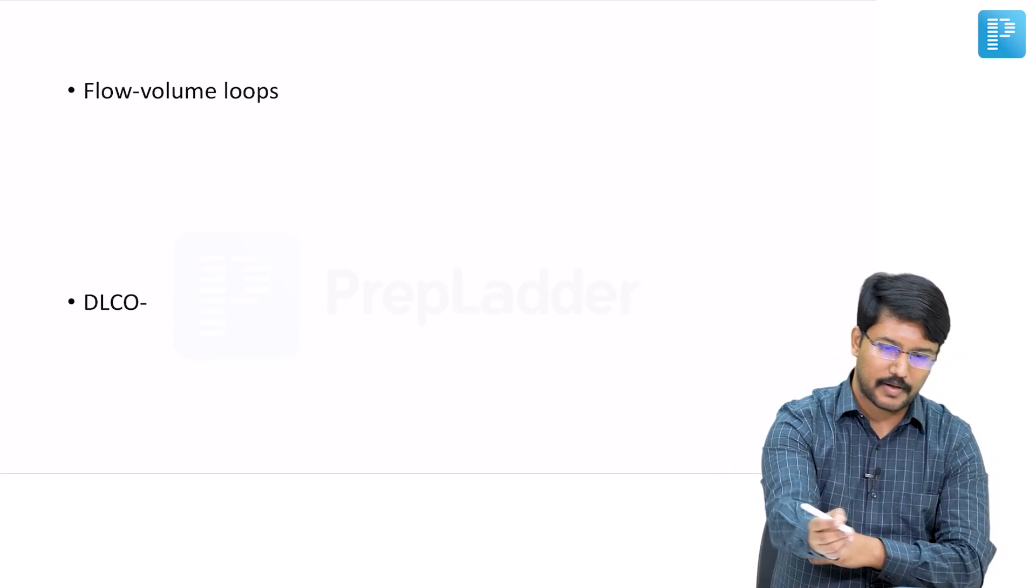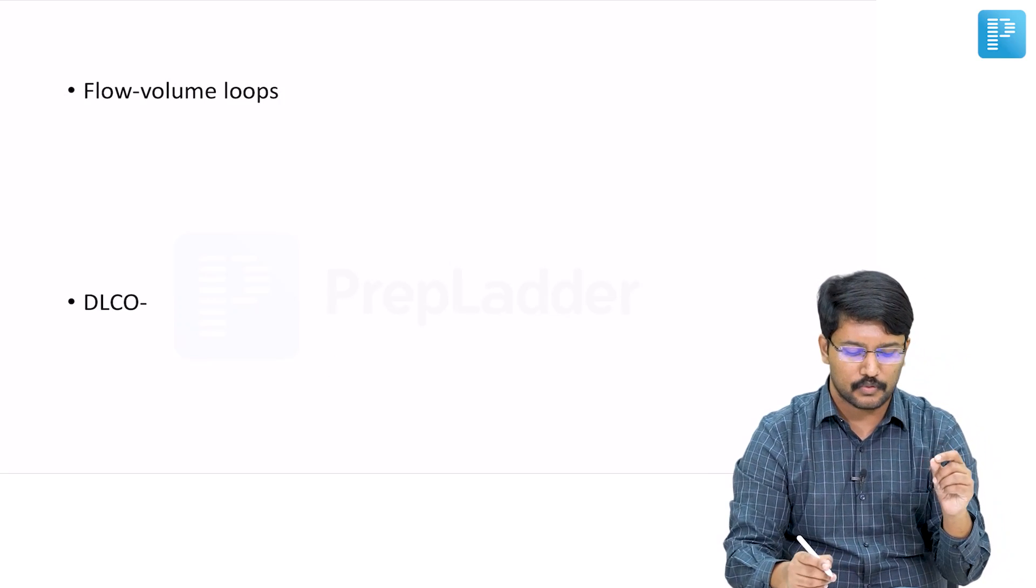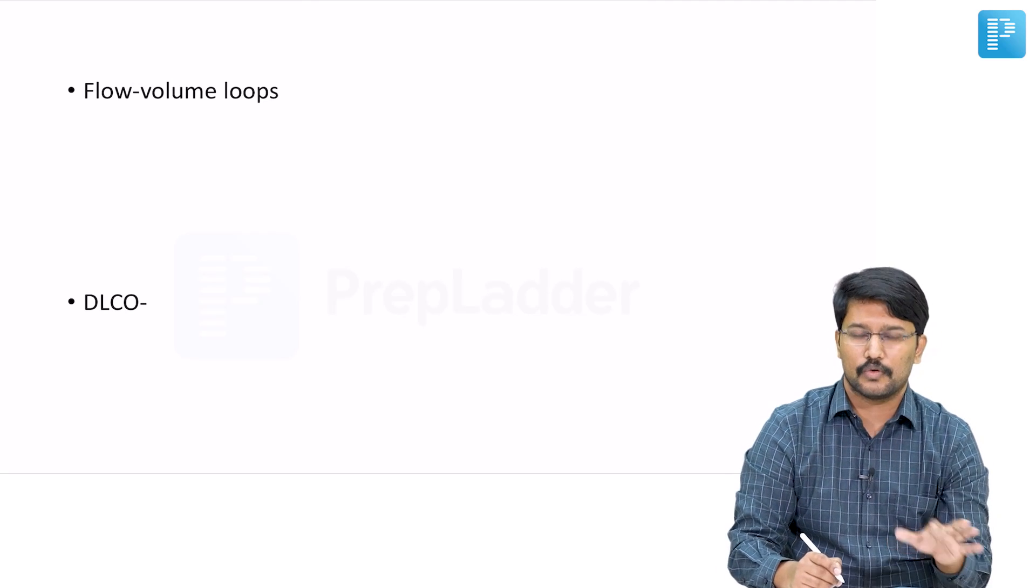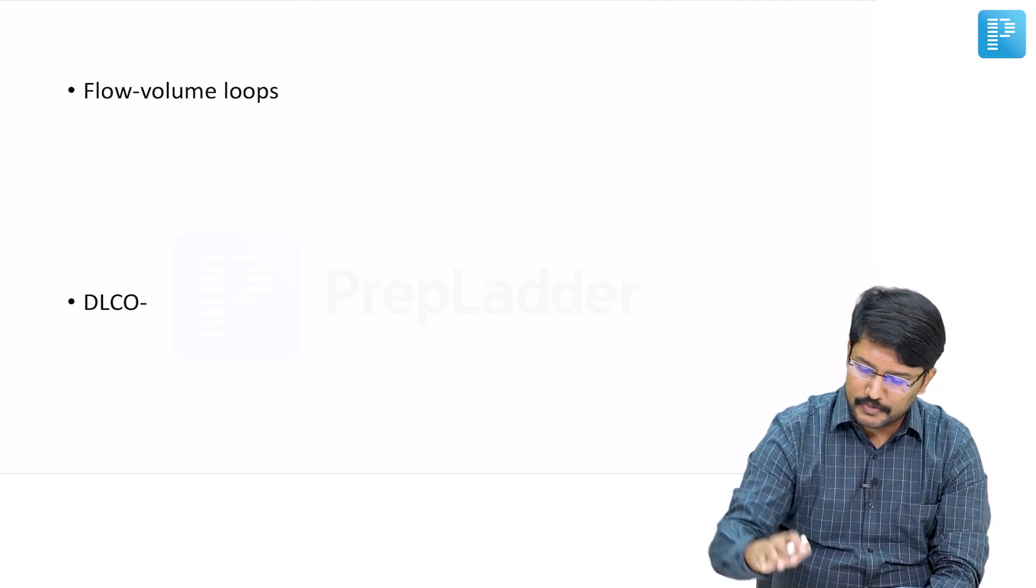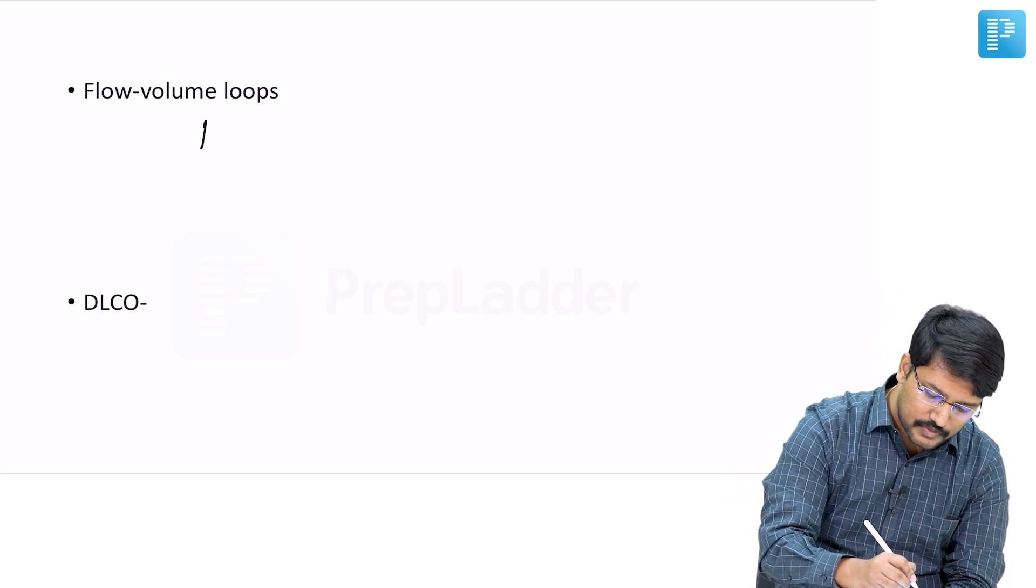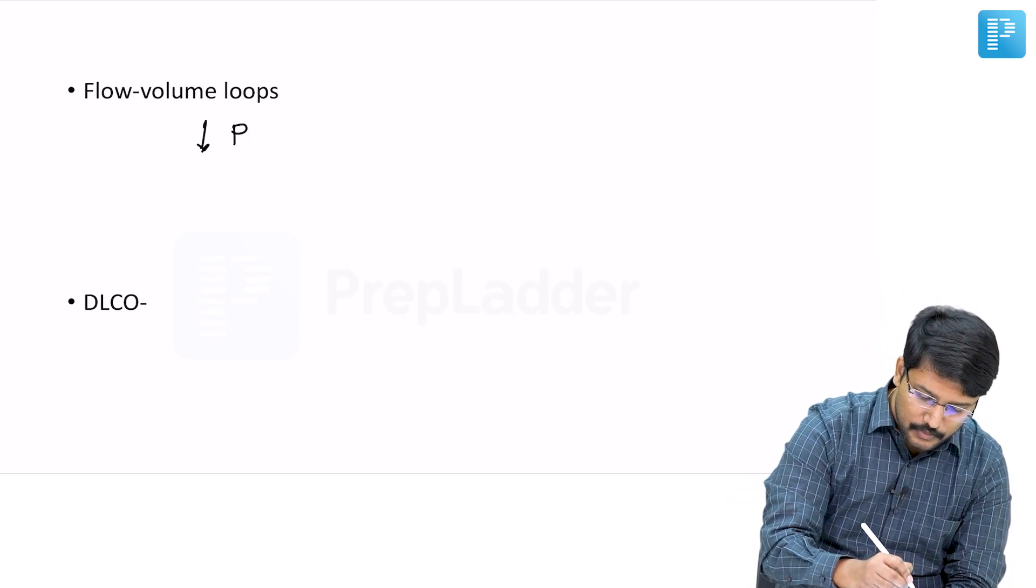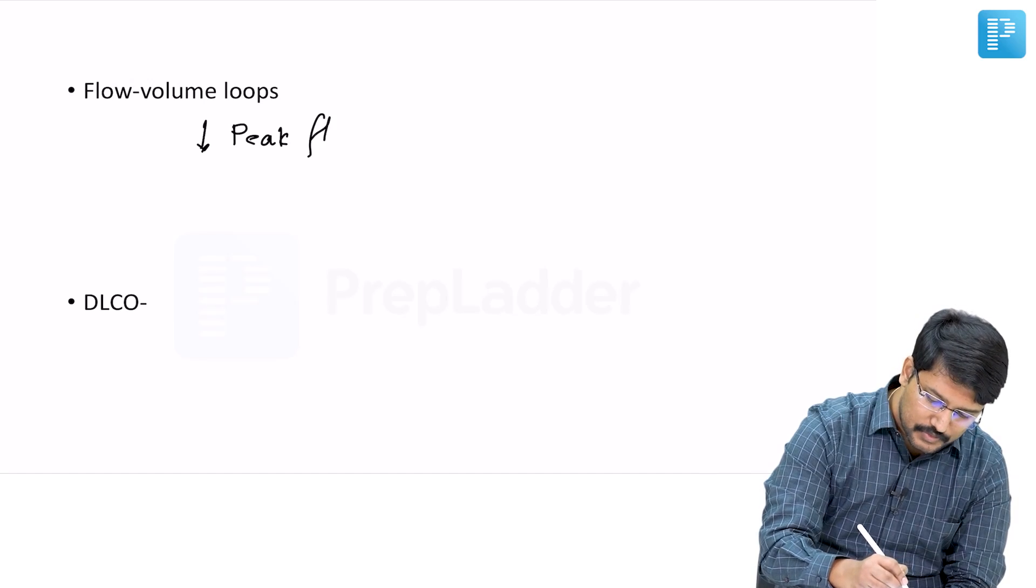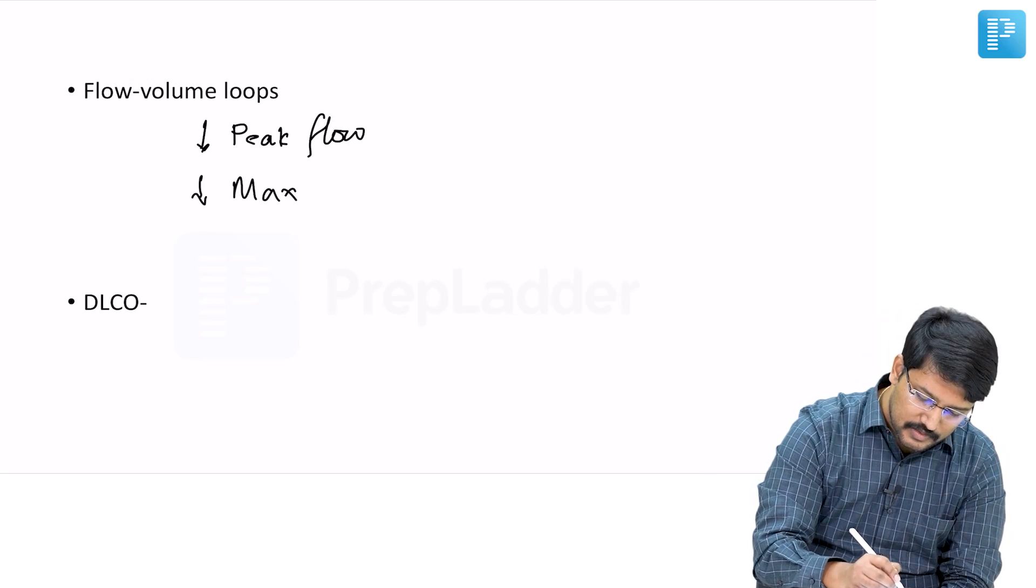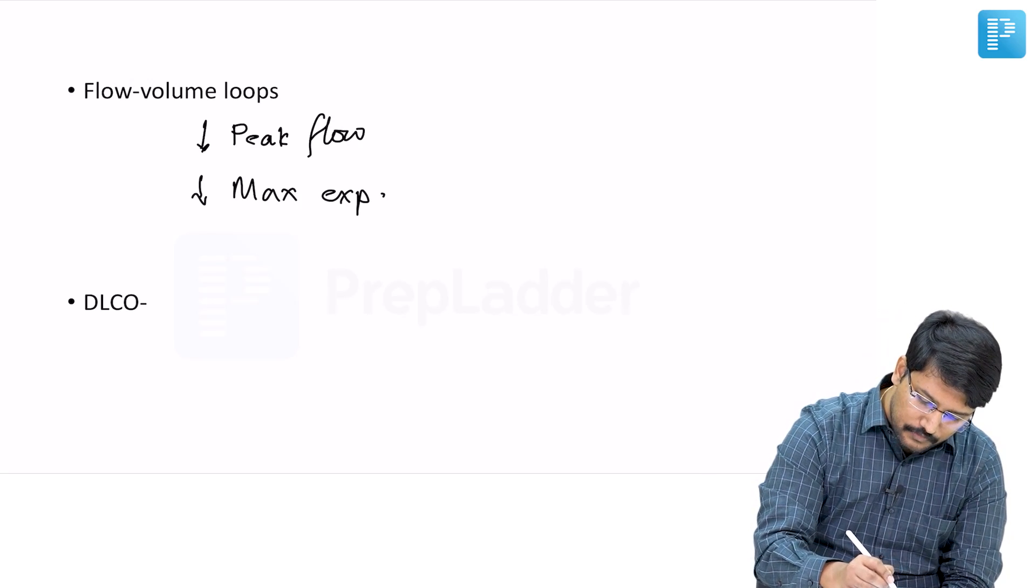Other findings that may help us or give some clues towards the diagnosis is flow-volume loops. What happens in bronchial asthma? When you see a flow-volume loop, you will notice that peak flow is reduced, and also there is reduction in maximum expiratory flow.